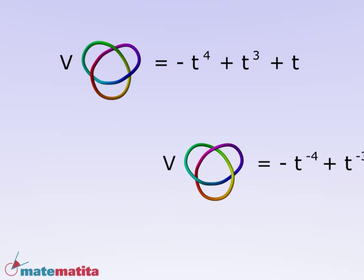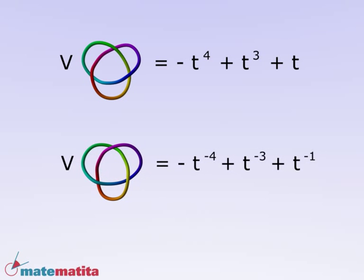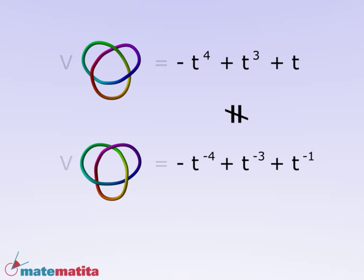If we calculate the Jones polynomial on the left trefoil, we obtain an expression that is symmetric to the other, in some sense, but not equal. We have proved that the two trefoils are not equivalent.